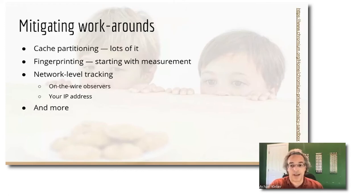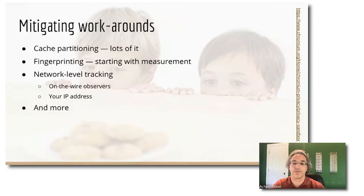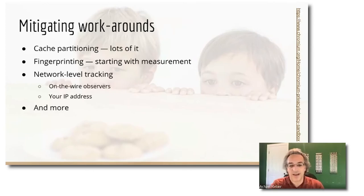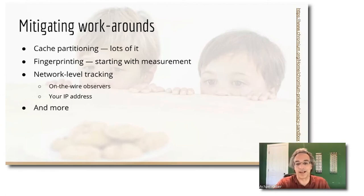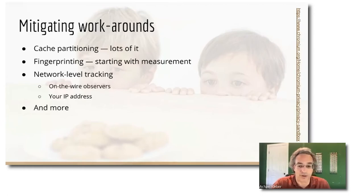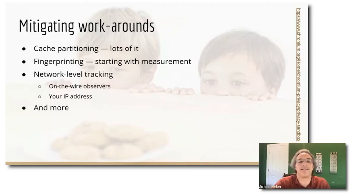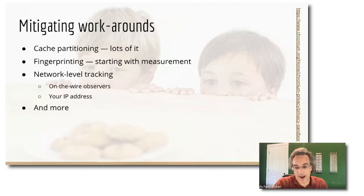Second, there's combating fingerprinting. Our main effort here starts with measuring how much browser-instance-identifying information is given out as a website uses various browser APIs, with the intention of distinguishing normal from egregious information collection — telling the difference between a site that uses three fonts to display text versus a site that tries 500 fonts just to create a hash of which subset are available to identify you. The next bucket is network-level tracking: DNS over HTTPS and encrypted SNI target attackers where an on-the-wire observer like your ISP could build a profile of your browsing. There's also a broader problem of IP address privacy, which is a really hard problem with more to come.